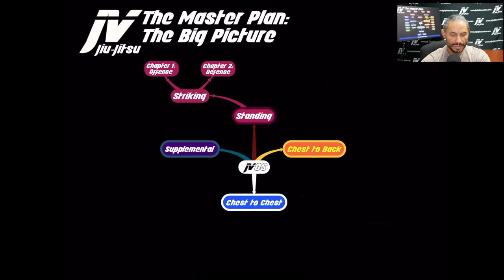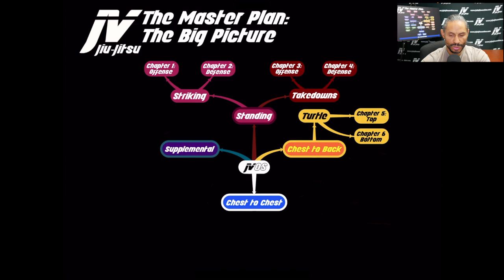Chapters 1 and 2 cover Striking, and Chapters 3 and 4 cover Takedowns. Chapters 5 and 6 are the Turtle — Turtle Top and Turtle Bottom. Back Mount is Chapters 7 and 8: Chapter 7 is Back Mount Offense and Chapter 8 is Back Mount Defense.